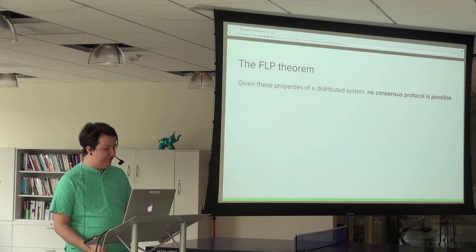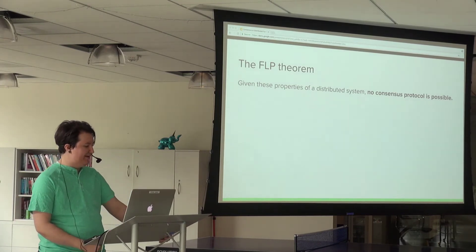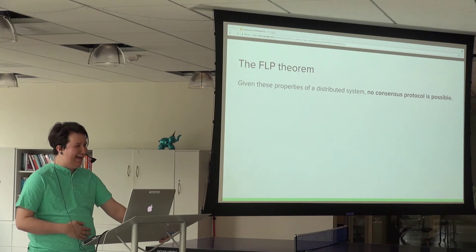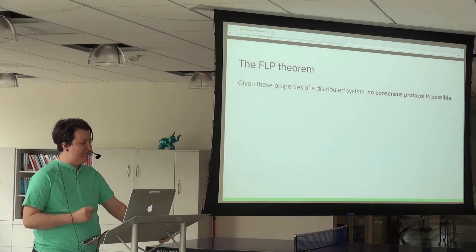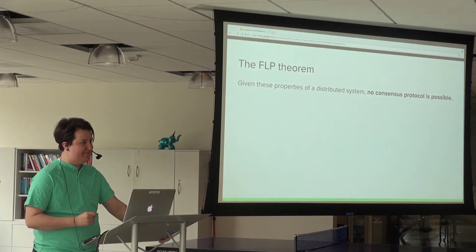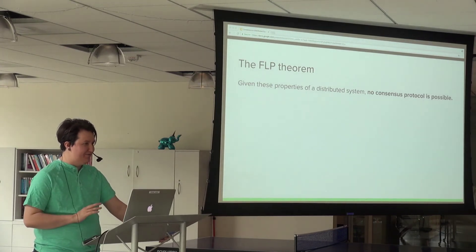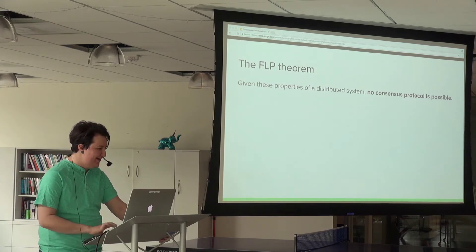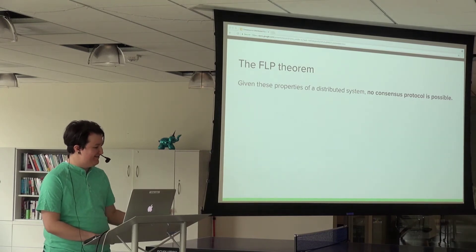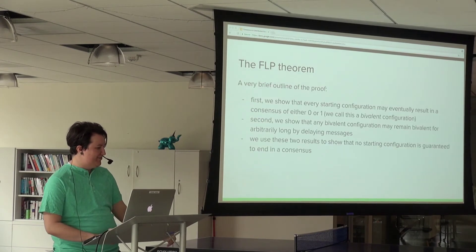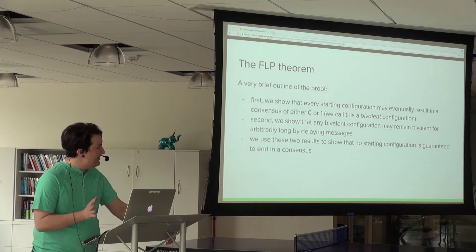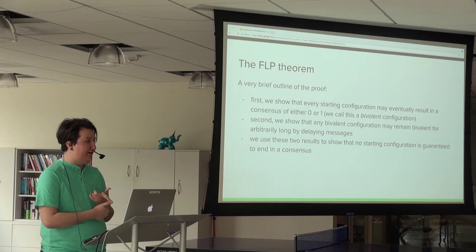The authors are all pretty important people. Nancy Lynch in particular was involved with almost every significant result in distributed systems. She's great - if you read through her CV you'll learn so much. But I'm going to focus on this theorem and how we prove it. The basic outline is we prove that every starting configuration could eventually result in either outcome.